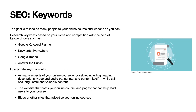For SEO keywords, the goal is to lead as many people to your online course and website as you can. Research keywords based on your niche and competition with the help of tools such as Google Keyword Planner, Keywords Everywhere, Google Trends, or Answer the Public. Incorporate these keywords naturally into many aspects of your online course, including headings, descriptions, video and audio transcripts, and the content itself.